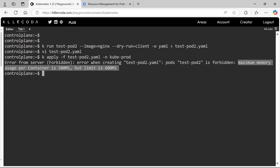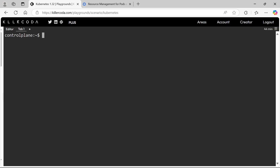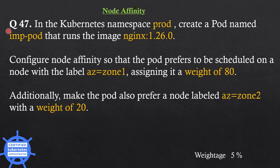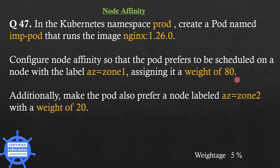In the next question we will cover a node affinity related question. Node affinity in Kubernetes is used to attract pods to specific nodes based on labels. The question is: in the Kubernetes namespace prod, create a pod named impod that runs the image Nginx 1.26.0. Configure node affinity so that the pod prefers to be scheduled on a node with the label az equals zone 1, assigning it a weight of 80. Additionally, make the pod also prefer a node labeled az equals zone 2 with a weight of 20.